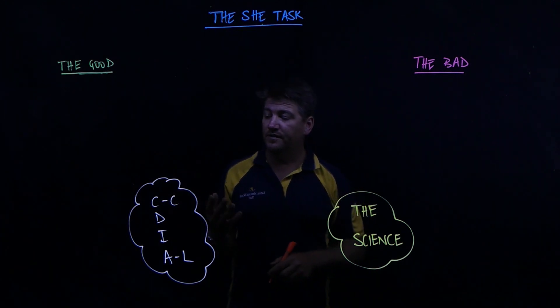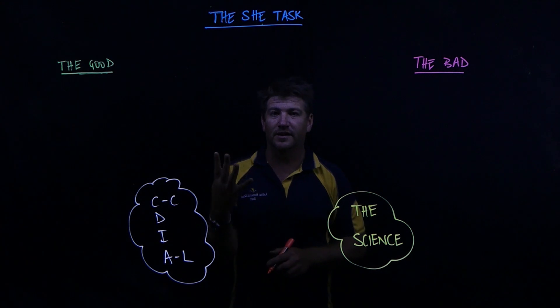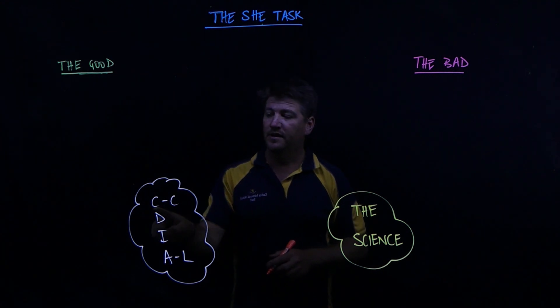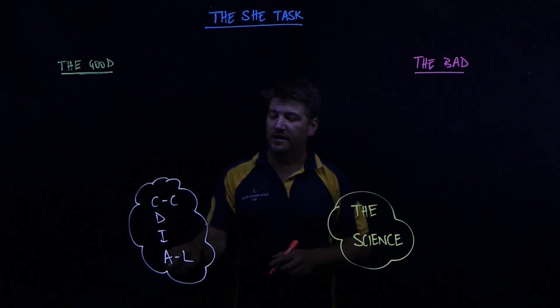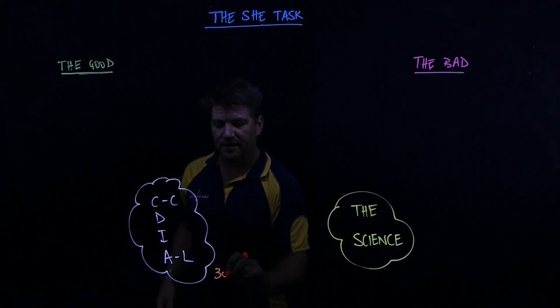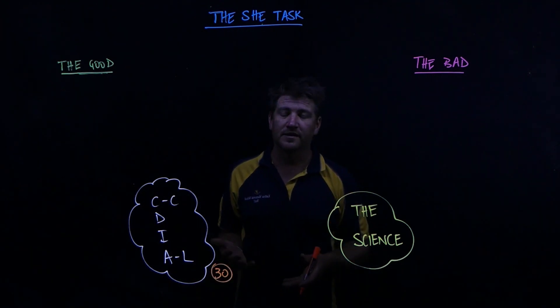There are four big key ideas in Science of Human Endeavour: communication and collaboration, development, influence, and application limitation. And for these four things, there are 30 sentences.